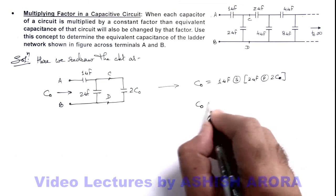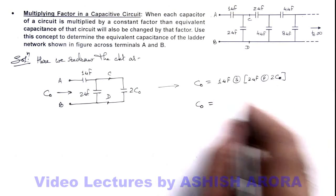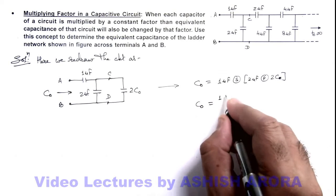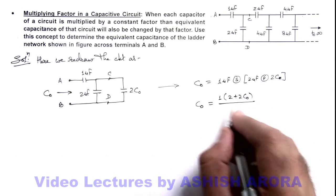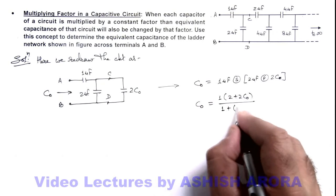On substituting the mathematical result, this will be 1 multiplied by 2 plus 2C_not, divided by 1 plus 2C_not.